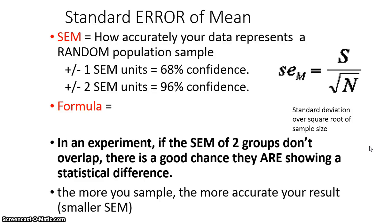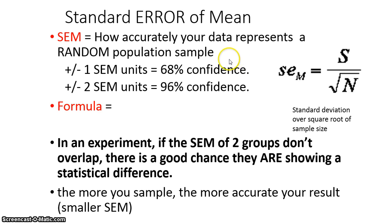This is the second formula on the AP formula sheet that you also do not actually have to use, and it's called standard error of the mean. The standard error of the mean is related to standard deviation — it is the standard deviation divided by the square root of the population size. So basically, the bigger your population, you're going to get a smaller standard error of the mean. It also means the smaller your standard deviation, the smaller your standard error of the mean. What does it mean? It's how accurately your data represents a random sample.